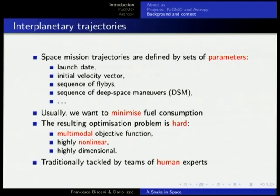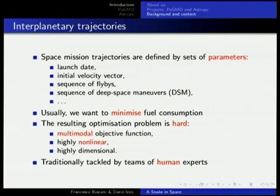Another parameter is the sequence of deep space maneuvers (DSMs) — when you're flying between planets, you can fire your thruster to imprint a change in trajectory to achieve some objective, like reaching a specific point in space. When talking about interplanetary spacecraft trajectories, 99% of the time the objective is to minimize fuel consumption. The less fuel you use, the more weight you have available on the spacecraft for your scientific payload — which is the reason you're doing the mission in the first place.